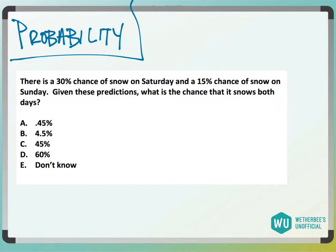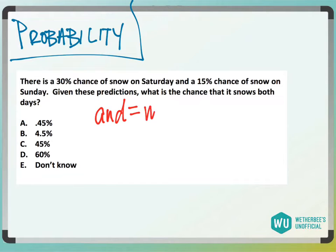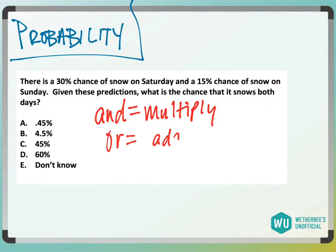Compound probability is pretty common on either test. What you need to know is that if it's 'and' with compound probability, you're going to multiply the two numbers. If it's 'or,' you're going to add.